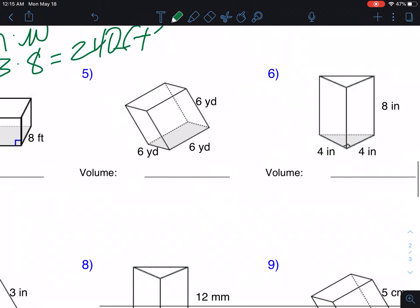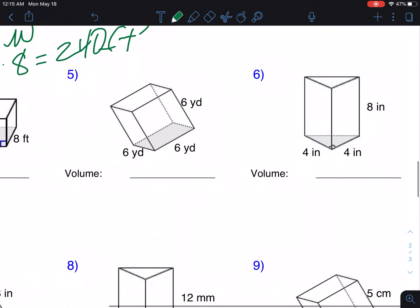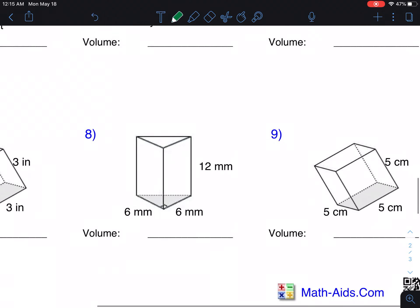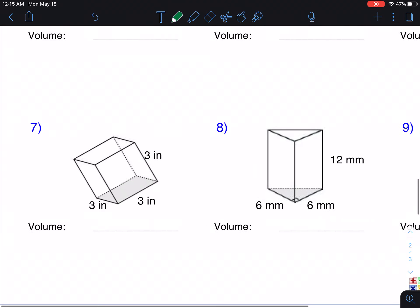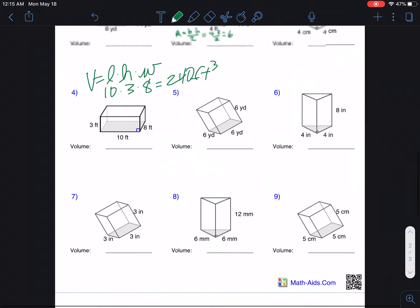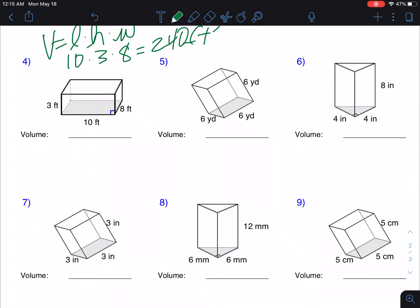So, on five, this cube, just do six times six times six. On number, let's see here, nine, five times five times five. Seven, three times three times three. So, that's kind of all there is to it with those. All right. Thanks, guys.